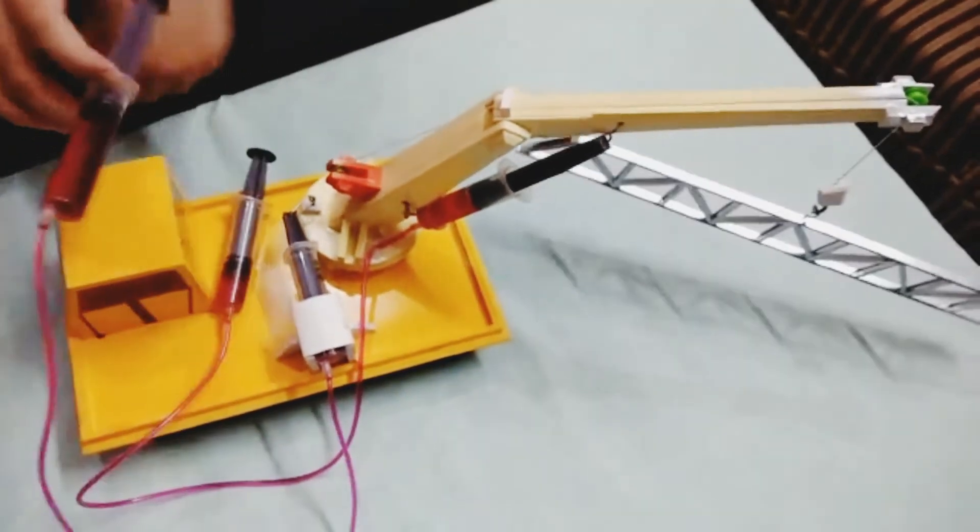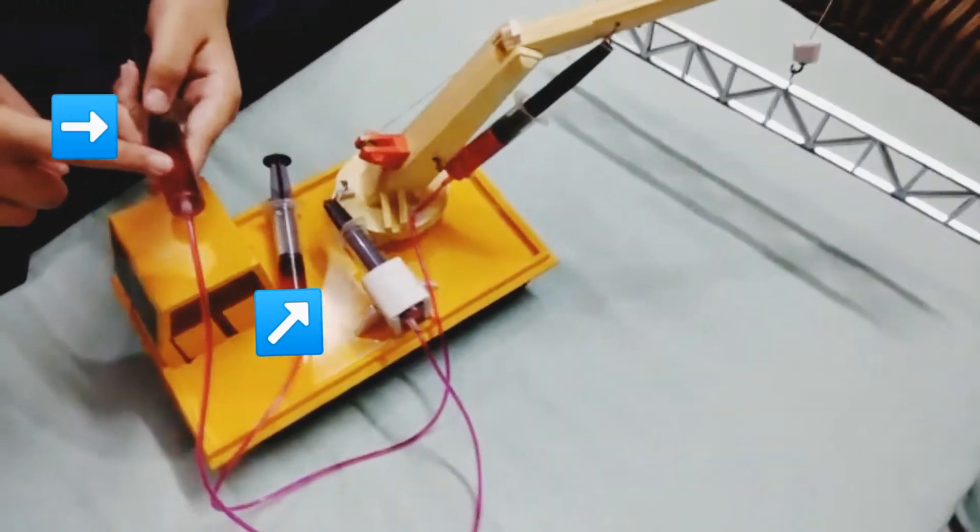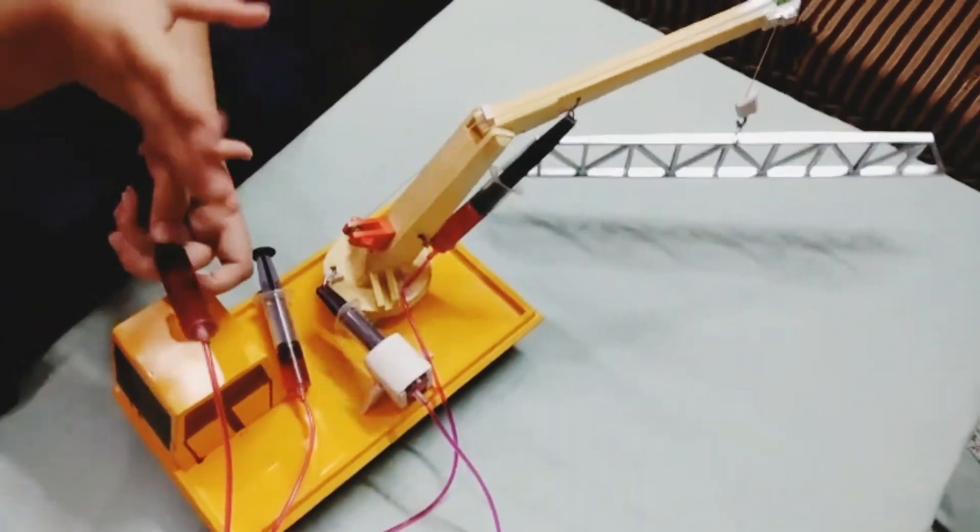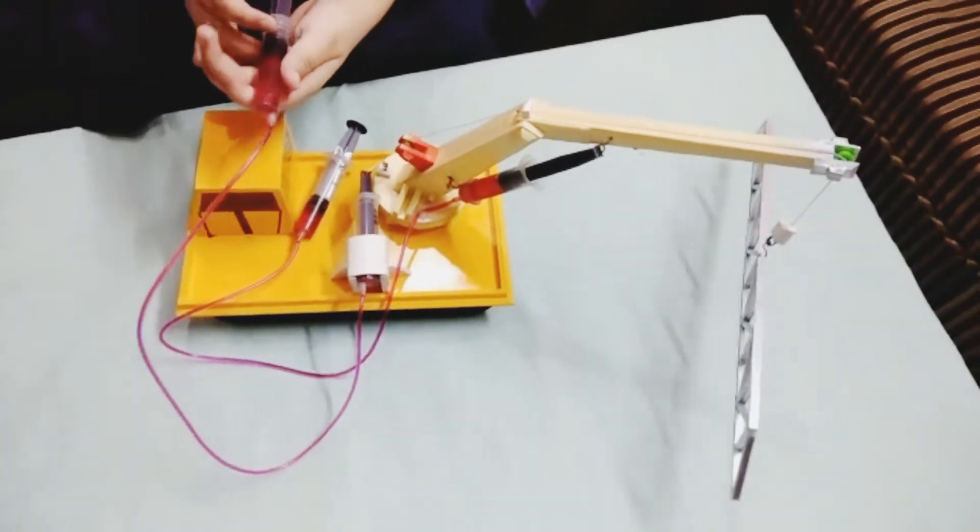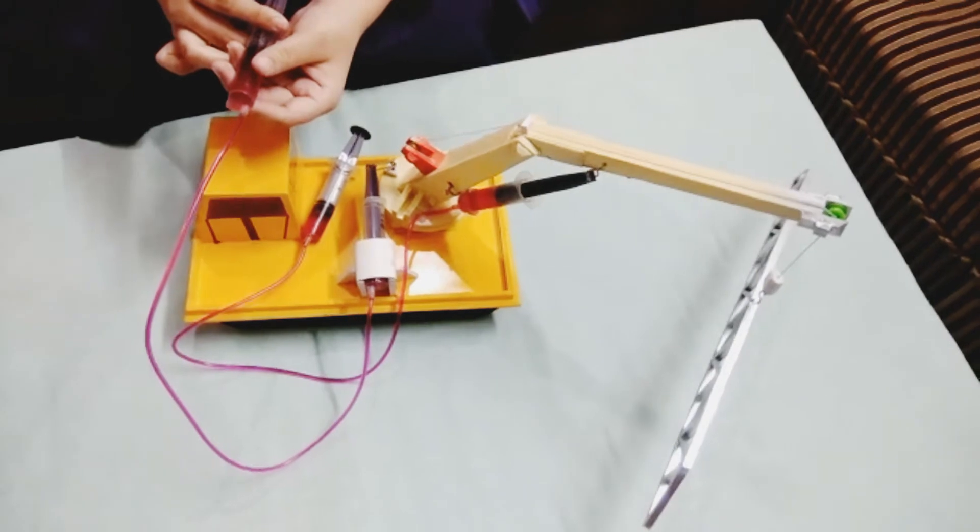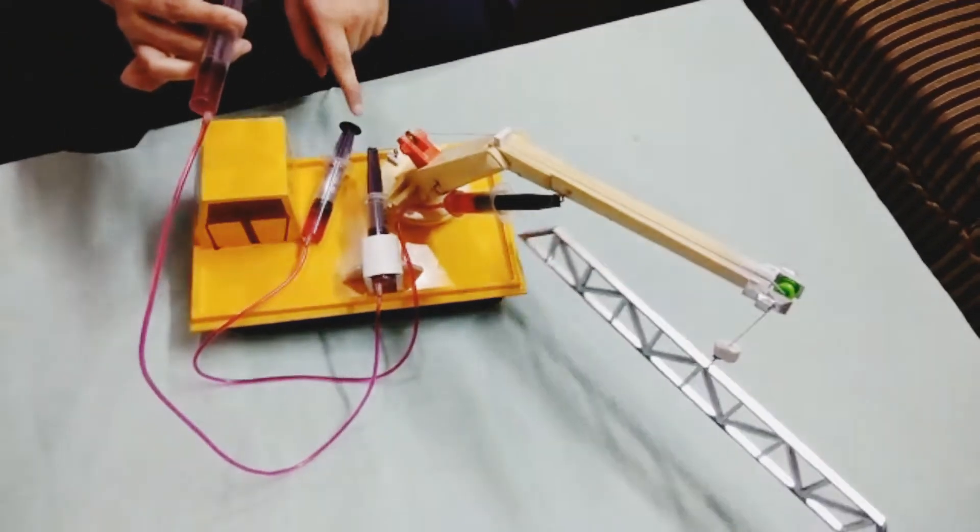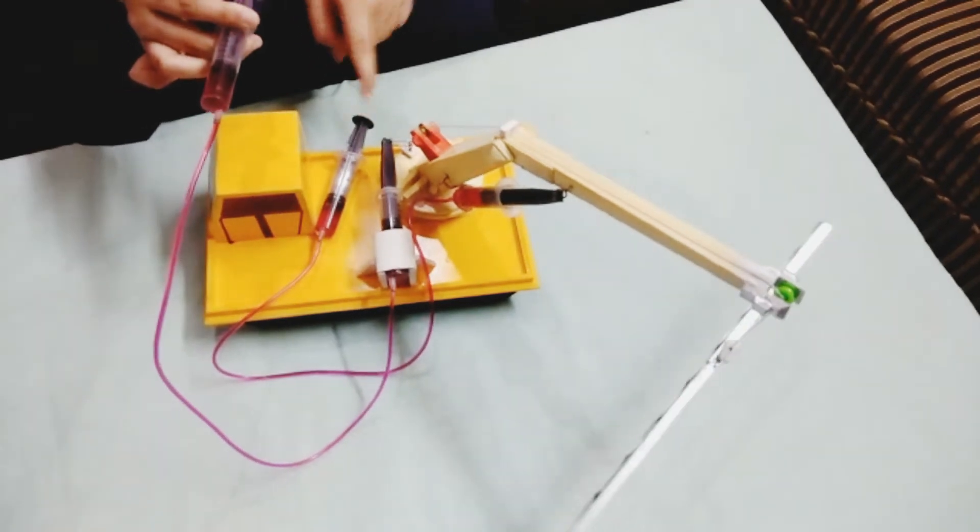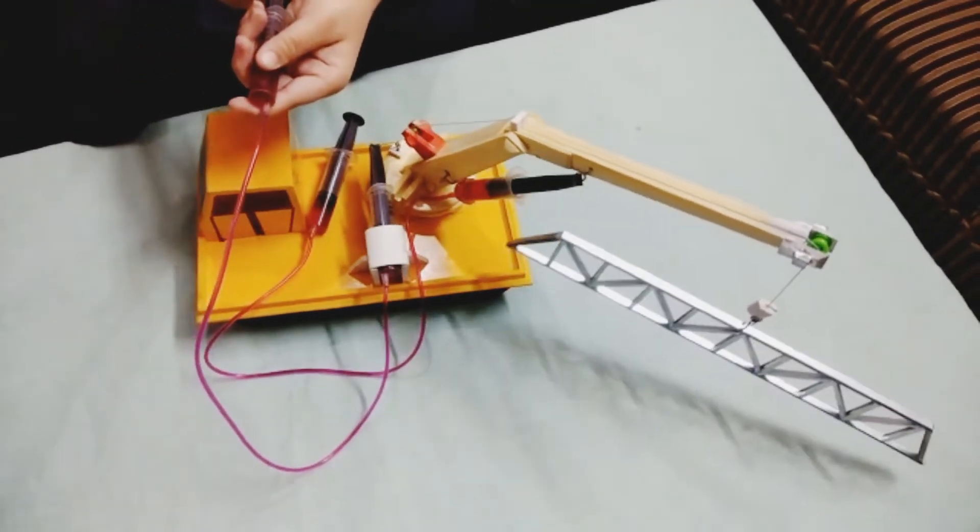Now coming to this piston, these two pistons are connected to each other and will be used for moving the crane sideways for better operation. So when I push this piston, the corresponding piston is pulling and making the crane move sideways, and vice versa.